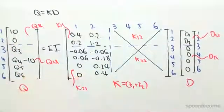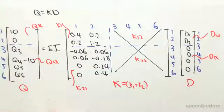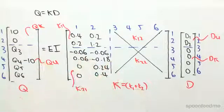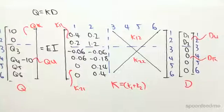We saw that in the previous video, how to partition it. Now I'm just showing you what it's going to look like. So we're now going to solve for D unknown.